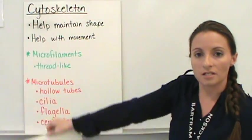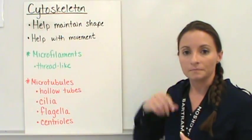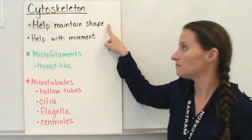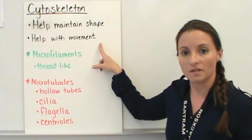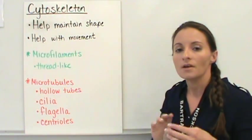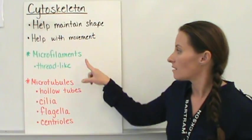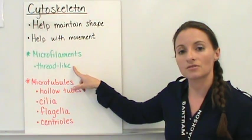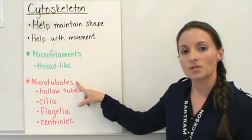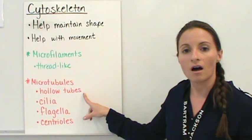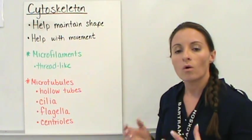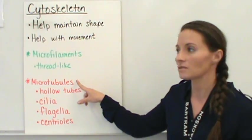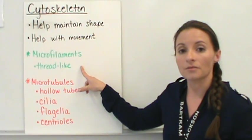The final structure we're going to talk about today is the cytoskeleton. The cytoskeleton helps maintain the shape of the cell and also sometimes helps with movement within the cell. There are two parts of the cytoskeleton. The cytoskeleton is made up of microfilaments, which are thread-like structures, and microtubules, which are hollow tube-like structures. One way you can remember that is that the tubes are tubules. Microtubules are tubules, and microfilaments are the thread-like structures.